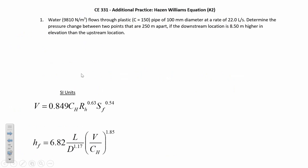This is the Hazen-Williams practice problem that you just solved. We have water flowing through a plastic pipe where we know the unit weight of water, the C value of the pipe, the diameter, and the flow rate. Anytime you have both the diameter and the flow rate, your mind should immediately jump to the fact that you can calculate the velocity relatively easily. That's important because if you want to calculate the head loss due to pipe friction, one of the direct input variables you need is the velocity. We've got the C value, the diameter, and the length of 250 meters — everything we need to calculate the head loss.